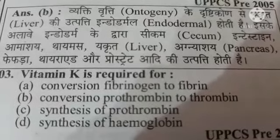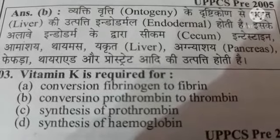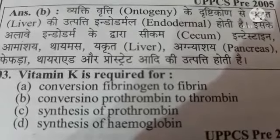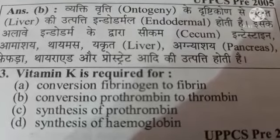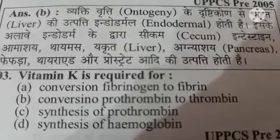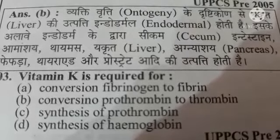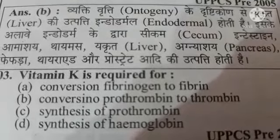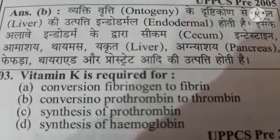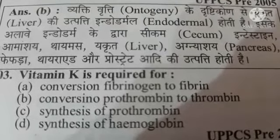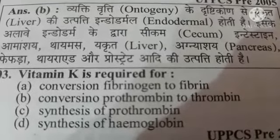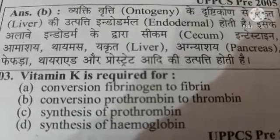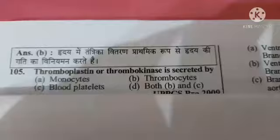Next question: vitamin K is required for — Option A: conversion of fibrinogen to fibrin, Option B: conversion of prothrombin to thrombin, Option C: synthesis of prothrombin, Option D: synthesis of hemoglobin. The correct answer is Option C: synthesis of prothrombin.